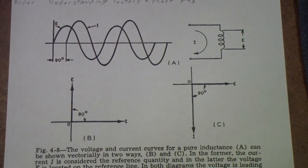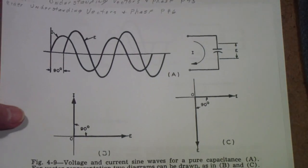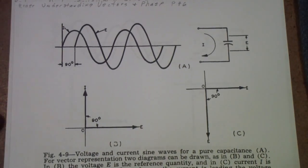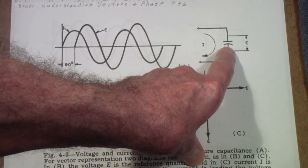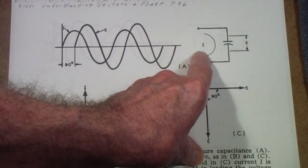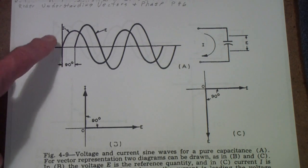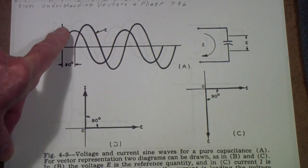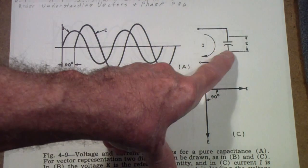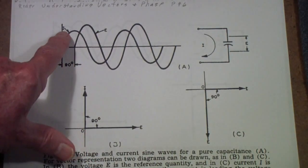So, what about the Iceman? Well, if you have a capacitor, once again, voltage across it is E, C is the capacitor, and I is the current. In that case, the current, I, leads the voltage, E. Therefore, I, C, E, ice.